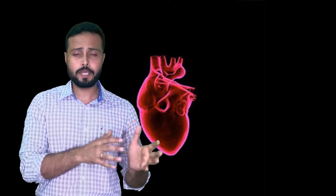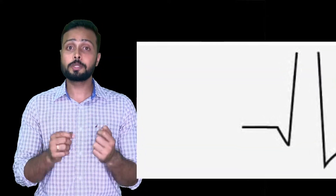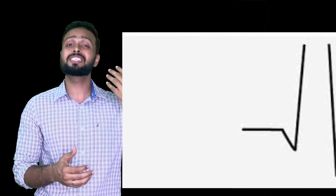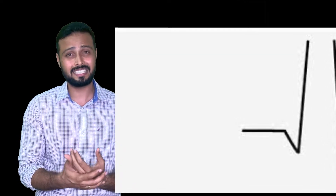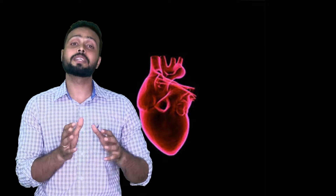Now let's look into the abnormalities that we can observe during exercise. This is very important especially when you are treating a patient post CABG, post MI, or a patient who has a high risk of any heart conditions. Let's start with the P wave: if the P wave goes missing during exercise, it means atrial depolarization is very reduced and can put the patient at high risk.